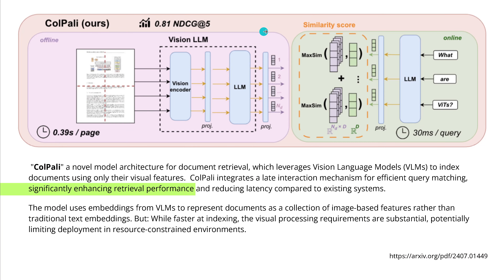Their methodology — their new vision language model is now called ColPali. And you can see we have a significant speed improvement: we are just at 0.4 seconds per page. It is a novel model architecture — real nice, but a little bit complex — and it builds on a lot of different subsystems.